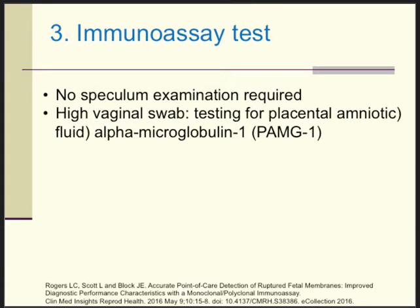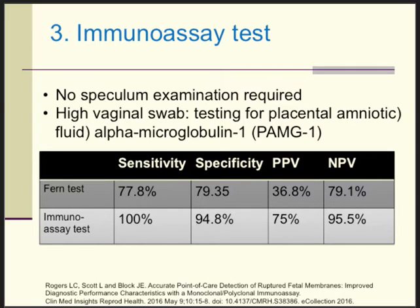The more recent, more expensive tests are so-called immunoassay tests. For these, no speculum examination is required — the lady can take a high vaginal swab herself, and we test for a specific placental alpha-microglobulin-1 (PAMG-1). This test takes about 10 minutes. A study published in 2016, comparing back-to-back the ferning test and the immunoassay test, found that the sensitivity, specificity, and positive predictive value of the immunoassay test are all higher. So the more modern test characteristics are superior.